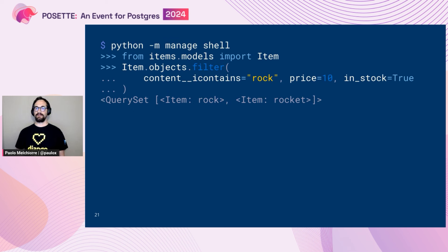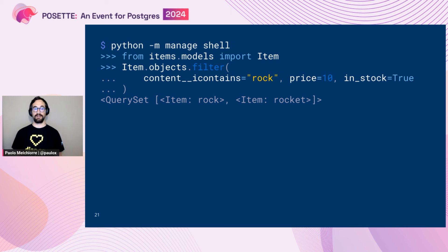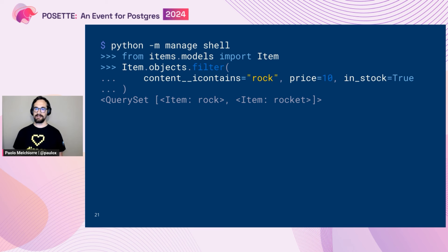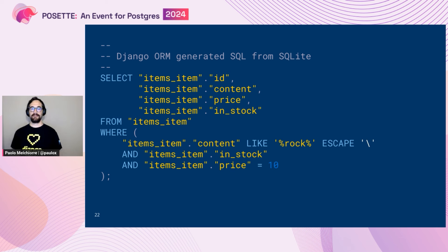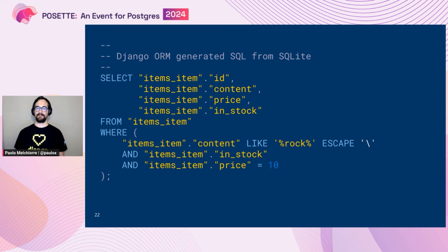Now we can perform some queries on this table. To do that, we enter the Django shell and import the newly created class. With the filter function, we can perform lookups on different fields of the model. We can search content in a case-insensitive mode and filter on price and stock columns. We get a list of Item representations — in this case only two items that contain the string 'rock' in their content: rock and rocket. And this is the SQL generated by the Django ORM on SQLite: a SELECT on the item table with the corresponding filter.